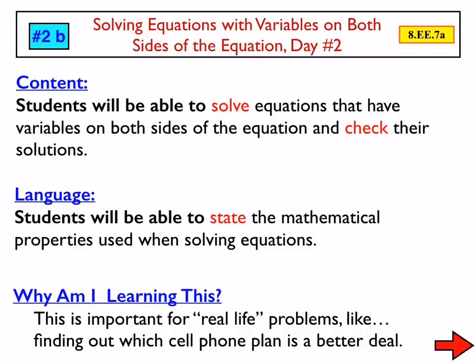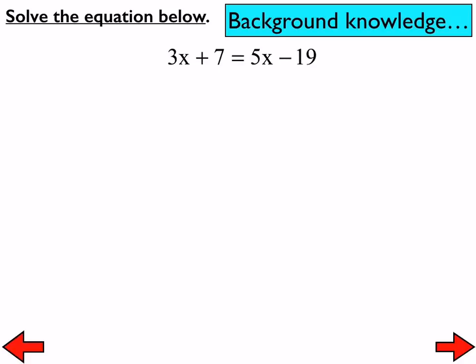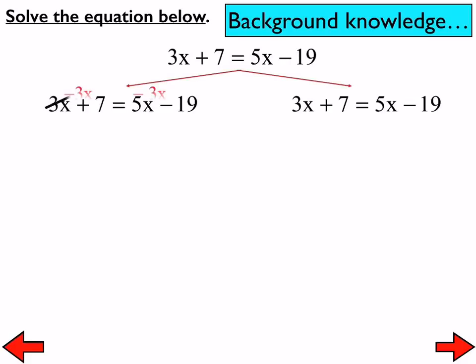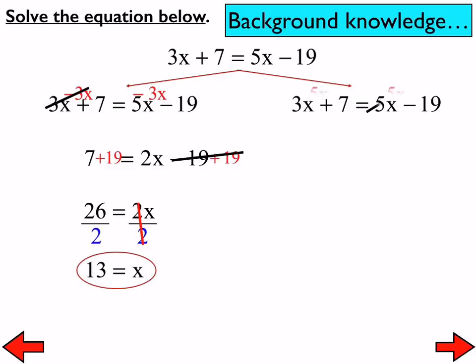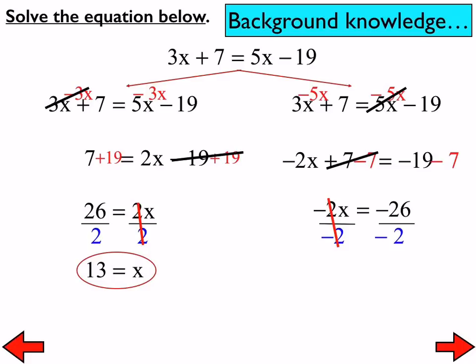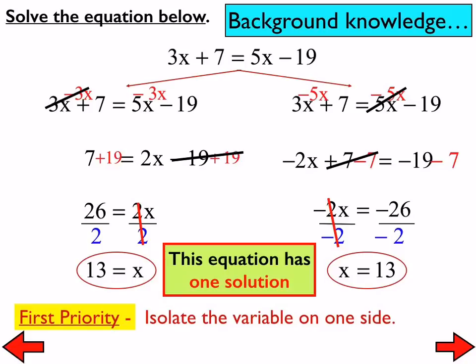Today, lesson 2b, day number 2 of solving equations with variables on both sides of the equation. A little background from day 1: we started solving equations with variables on both sides. What we're trying to do is isolate the variable on one side of the equation — whether on the right-hand side or the left-hand side. It doesn't matter which side, as long as you isolate on one side. In that first problem, we got a solution of x equals 13, meaning that equation has one and only one solution.